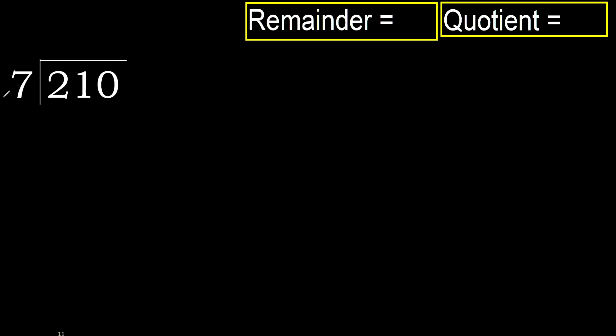210 divided by 7. 2 is less, therefore next. 21 is not less, therefore with 21: 7 multiplied by which number is nearest to 21 but not greater?